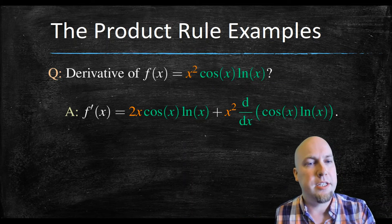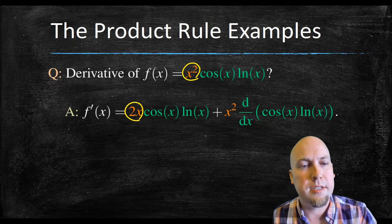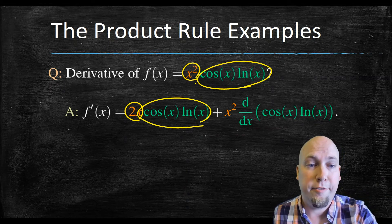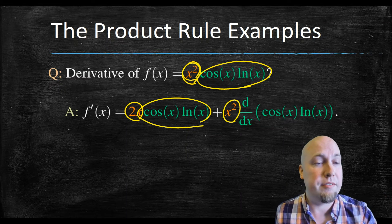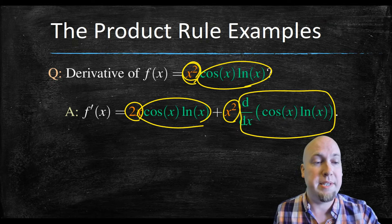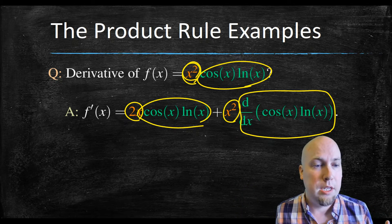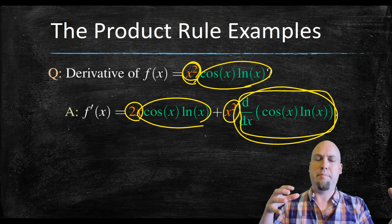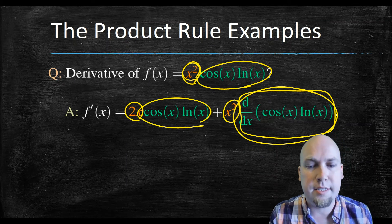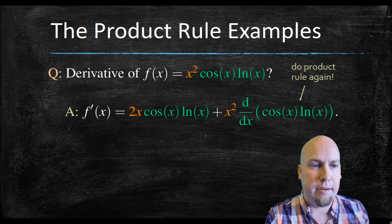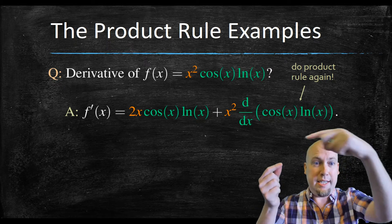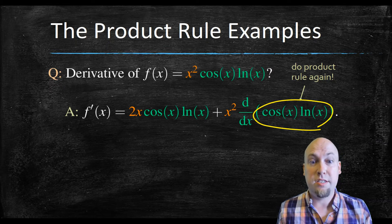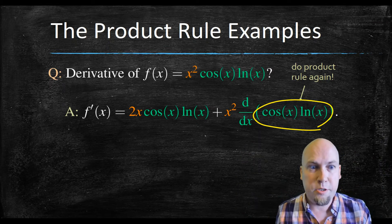The product rule gives: derivative of x squared, which is 2x, times the second function cos x ln x, plus x squared times the derivative of cos x ln x. But the derivative of cos x ln x isn't one of my rules from the table — I still have to find it. How do I find the derivative of cos x ln x? You use the product rule again, recursively, because it's itself a product of two functions whose individual derivatives you know.